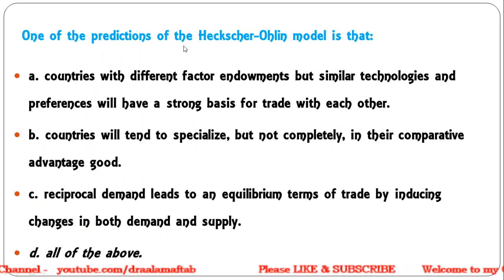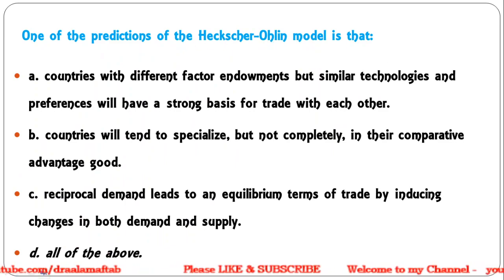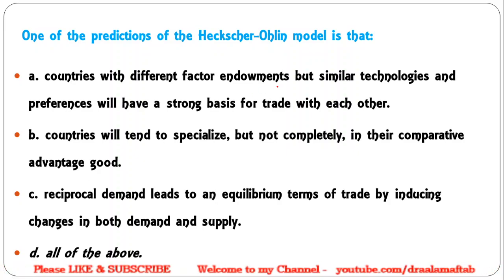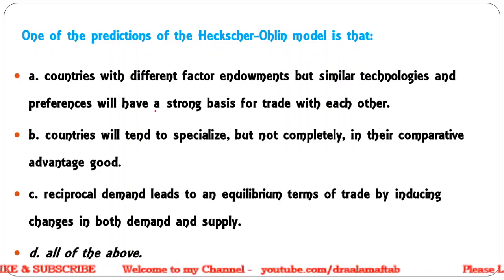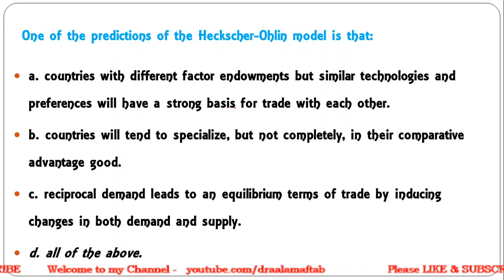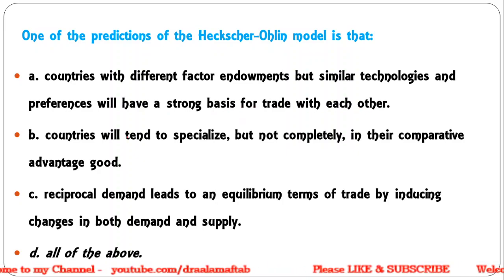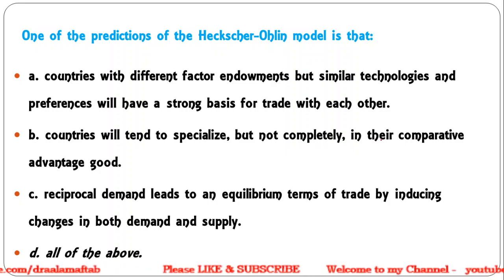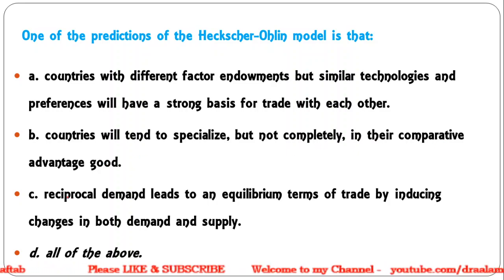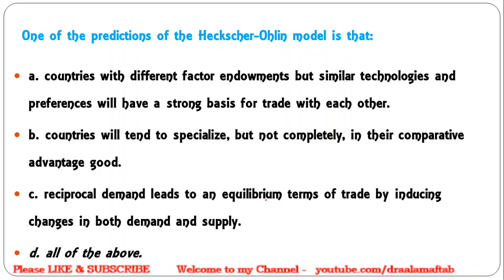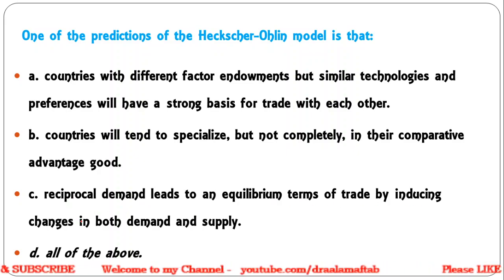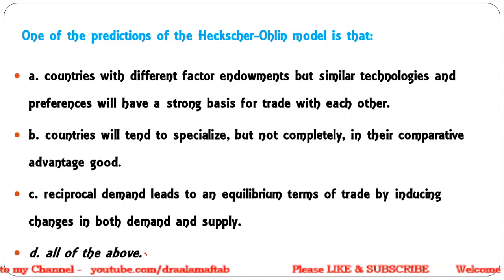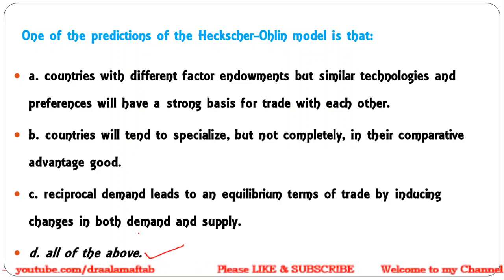Next: One of the predictions of the Heckscher-Ohlin model is that — countries with different factor endowments but similar technologies and preferences will have a strong basis for trade; countries will tend to specialize but not completely in their comparative advantage good; reciprocal demand leads to an equilibrium terms of trade by inducing changes in both demand and supply; all of the above. Correct answer is D — all of these three are correct.